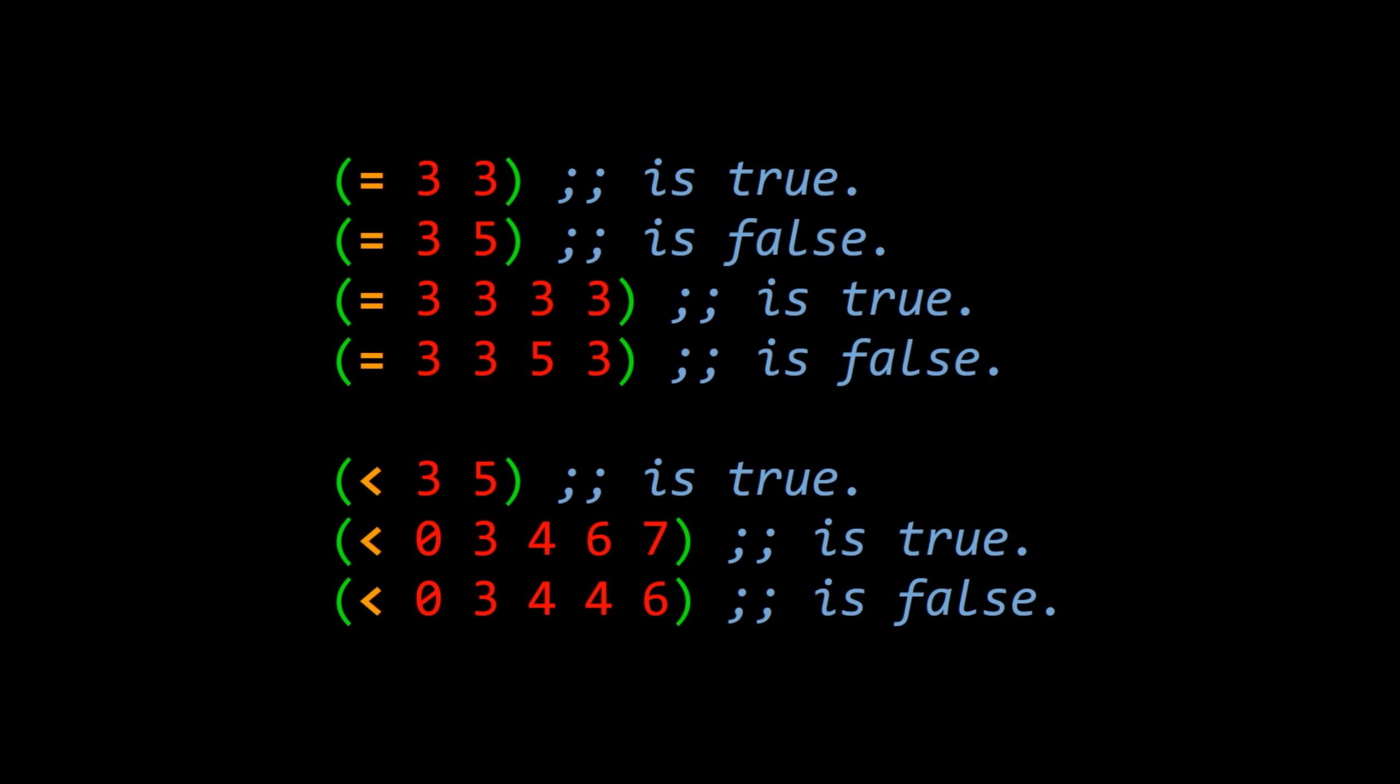And as shown here, it's also a first-class citizen in some functional languages, like Scheme, Common Lisp, and Clojure, with the added constraint that the chaining of the operator includes only the same operator, so you can't mix and match.